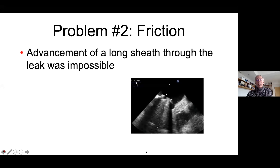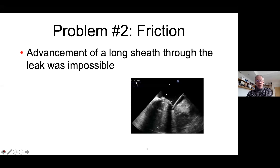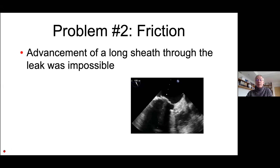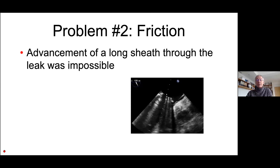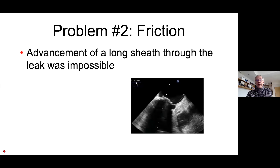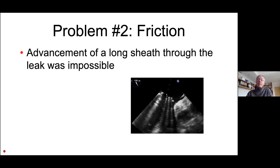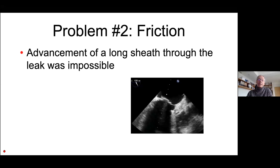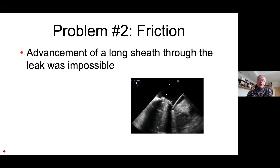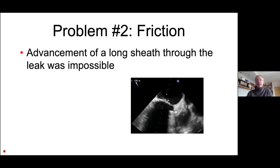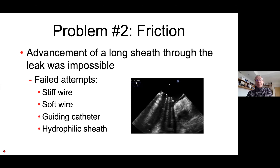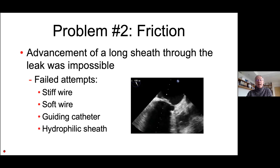So what do you do when the wire is across but you cannot advance a catheter? One option is to use a guiding catheter or hydrophilic catheter like the GlideCath from Terumo. You can also try different wires — stiffer wire, softer wire — or a hydrophilic sheath. I tried all these techniques and failed with all of them.